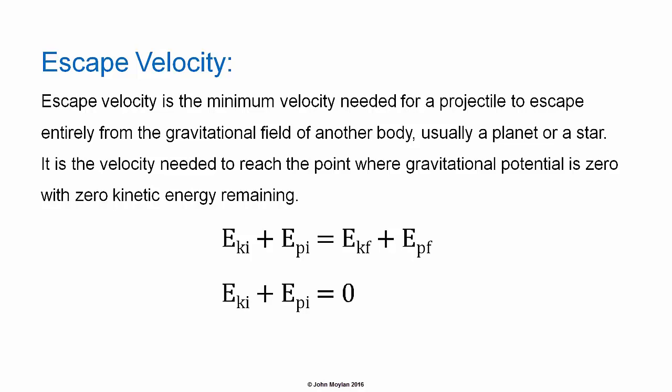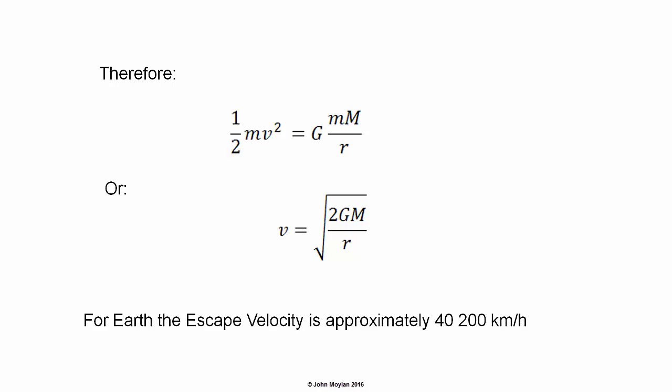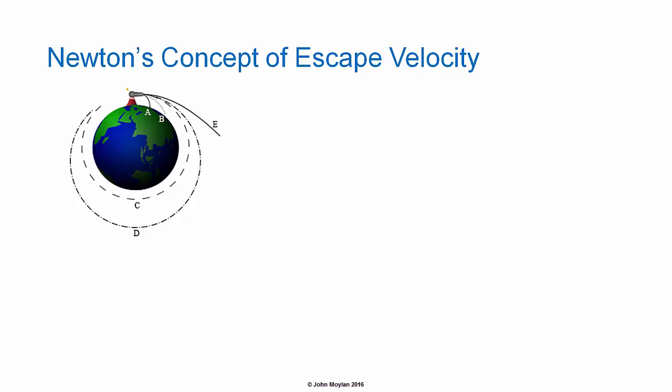Therefore we can say that E subscript KI plus E subscript PI equals zero, as a projectile when it reaches the point where gravitational potential energy is zero by definition has zero kinetic energy remaining. Therefore E subscript KI equals minus E subscript PI. Putting in the formulas for kinetic and potential energy: one half MV squared equals G times little m times big M over R. This can be rearranged to give the escape velocity: V escape equals the square root of 2GM over R, where G is the universal gravitational constant, M is the mass of the planet or body, and R is the initial distance from which the projectile is launched. For Earth, the escape velocity is approximately 40,200 km per hour.